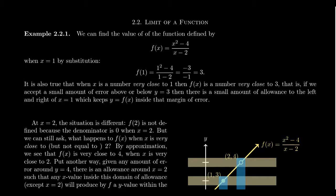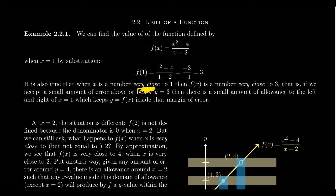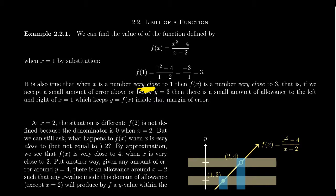Why this is relevant to calculus is the next statement. Let me draw to your attention that it is also true that when x is a number very close to 1, then f(x) is a number very close to 3. If we accept a small amount of error above or below y equals 3, then there's a small amount of allowance to left or right of x equals 1.